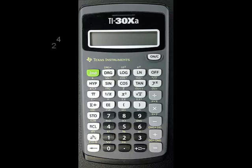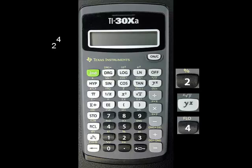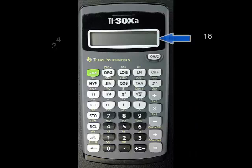For example, to calculate 2 to the fourth power, press 2, then y to the x, then 4, and finally, the equals key, because y to the x is a binary function. The answer should be 16.